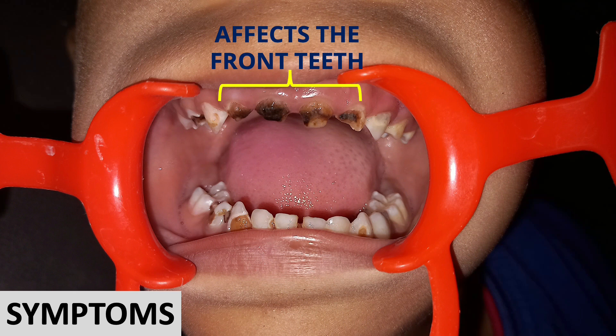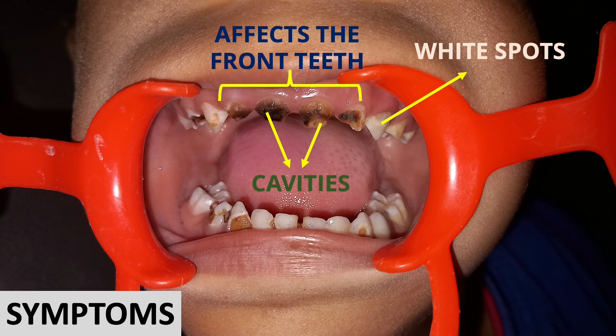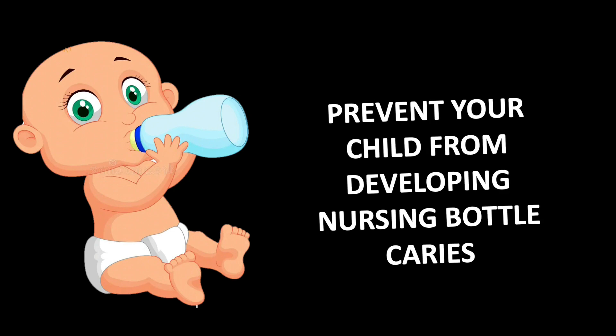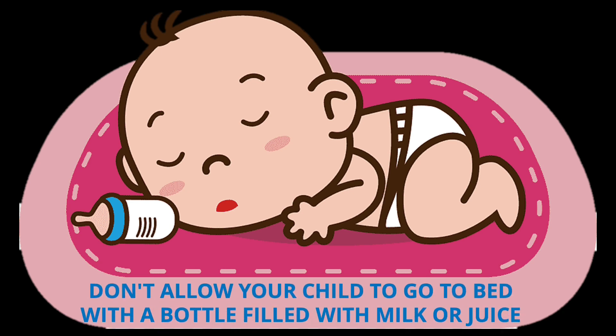Look at the figure — nursing bottle caries especially affects the front teeth. You can see white patches or spots on nearby teeth, which means the beginning of cavity development. The anterior four teeth show brown discoloration, meaning cavities have already formed in the front teeth. If your child's teeth look somewhat like this, it means your child is developing nursing bottle caries.